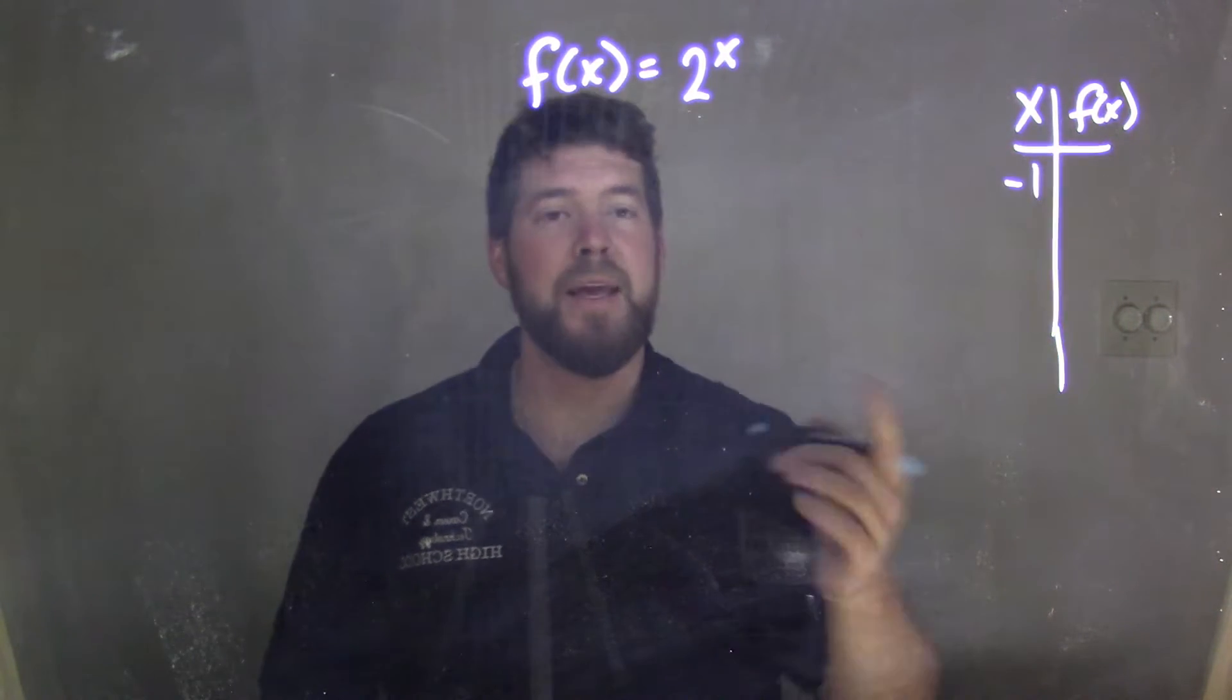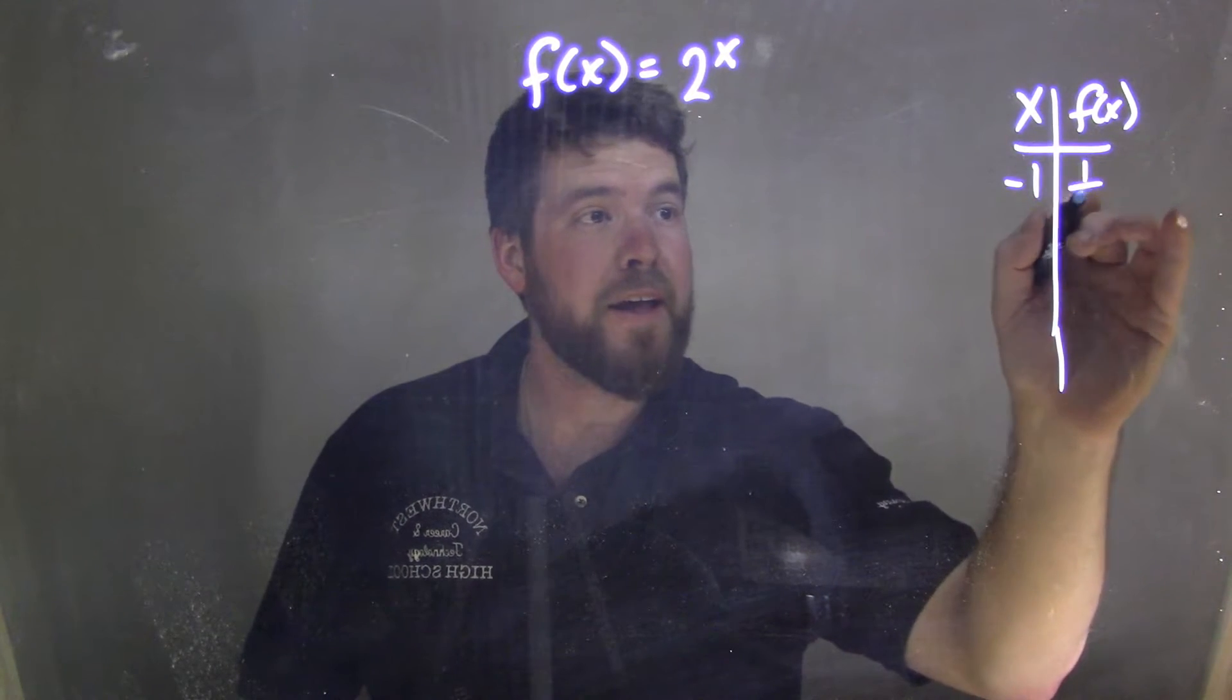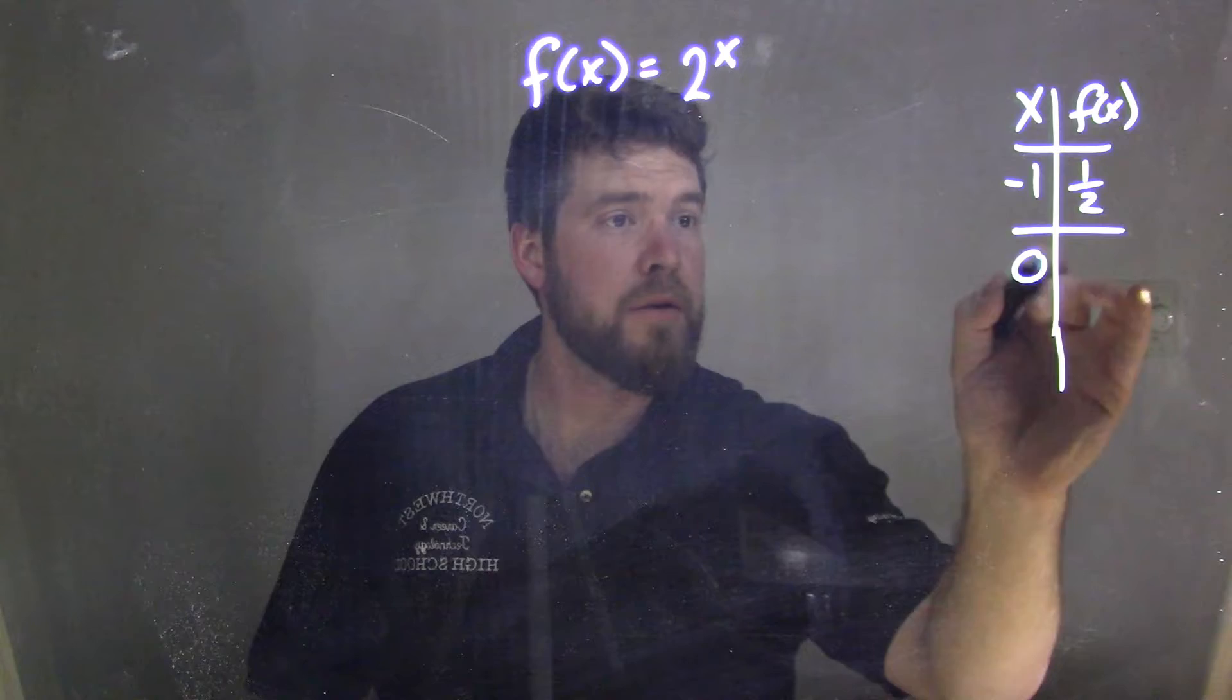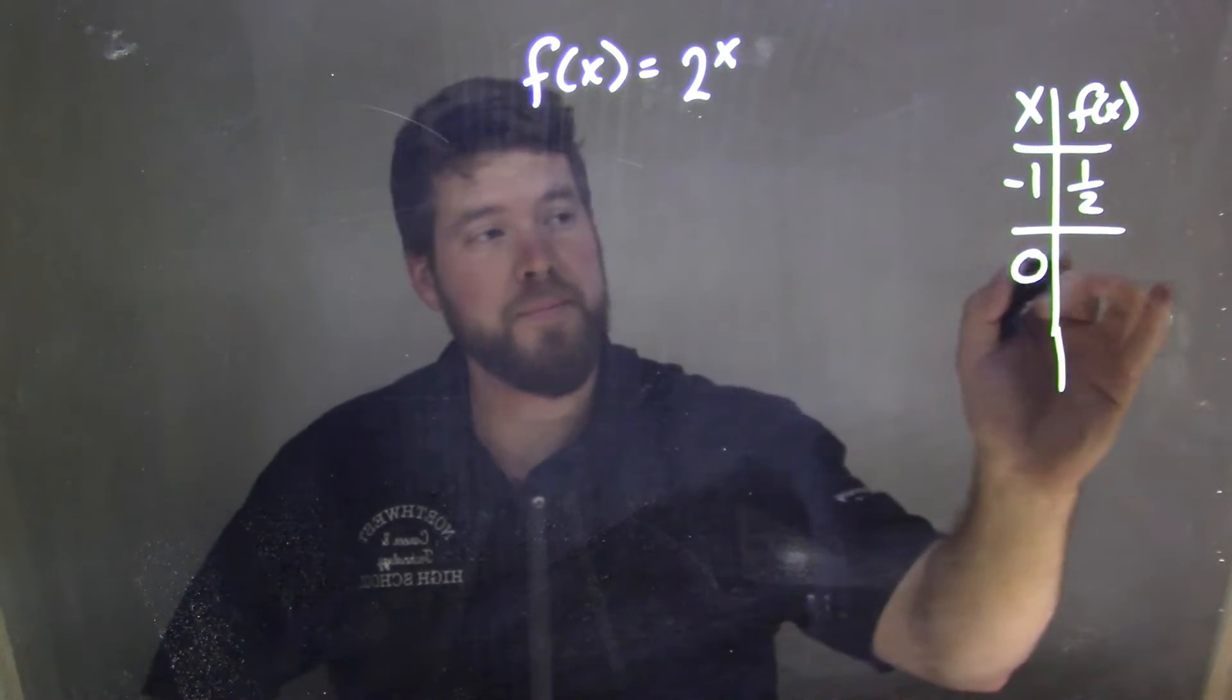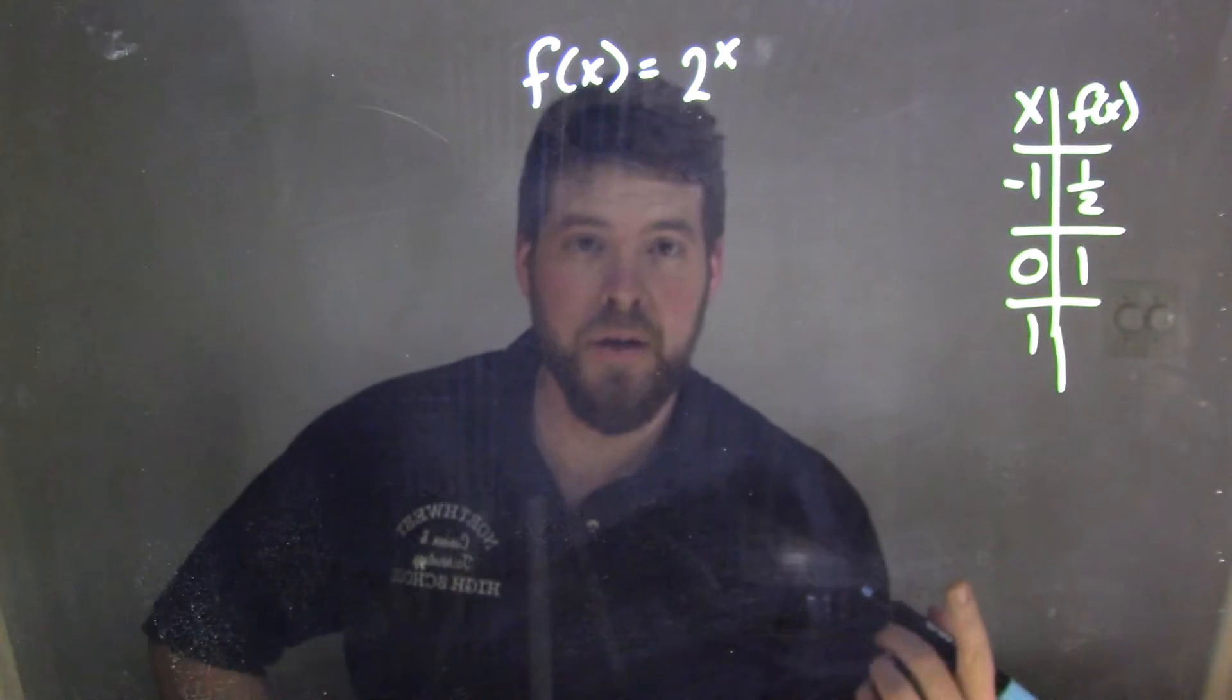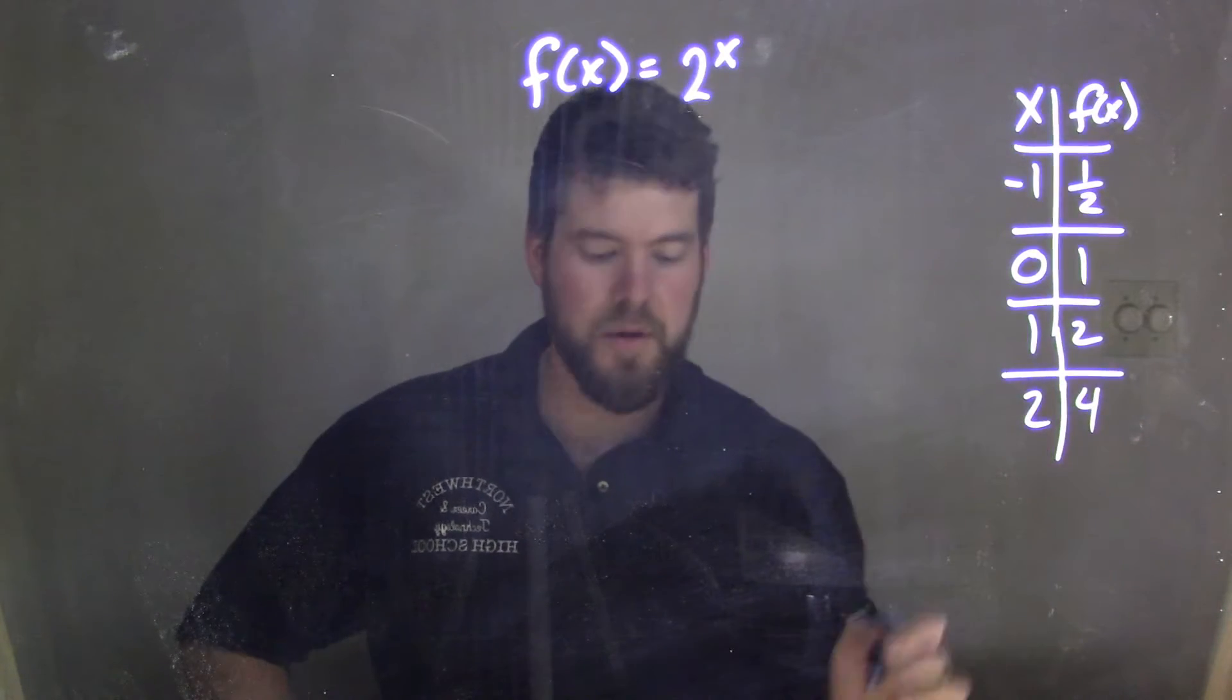So if I plug negative 1 in for x, I have 2 to the negative 1 power. That comes out to be 1 half. Remember, 2 to the negative 1 power is the same thing as 1 over 2. If I put 0 in for x, 2 to the 0 power comes out to be 1, because any number to the 0 power is 1. Now if I put 1 in for x, 2 to the 1st power is 2, and 2 to the 2nd power is 4.